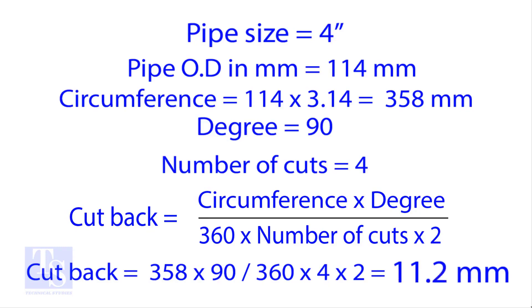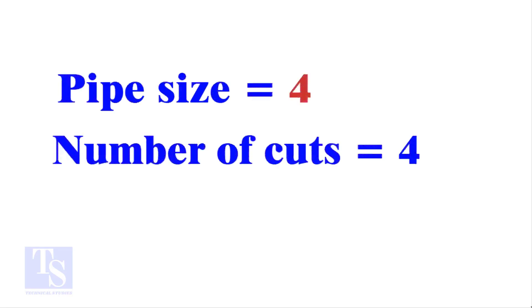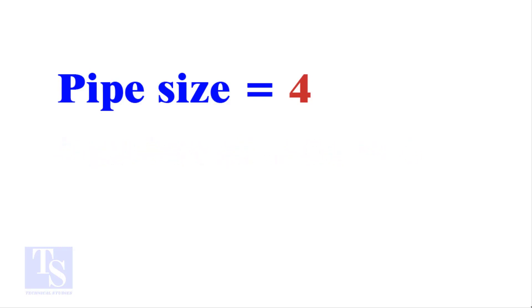Let us try the quick method. See the fast calculation method now. Let the pipe size be 4 inch and the number of cuts also be 4. Remember, you can use any number of cuts up to 9. Write down number of cuts 4, to the right side of the pipe size 4. Now, the sum is 44.